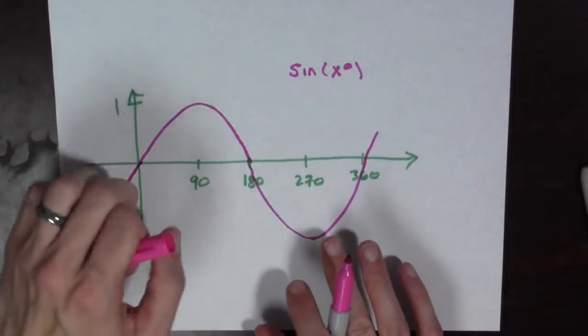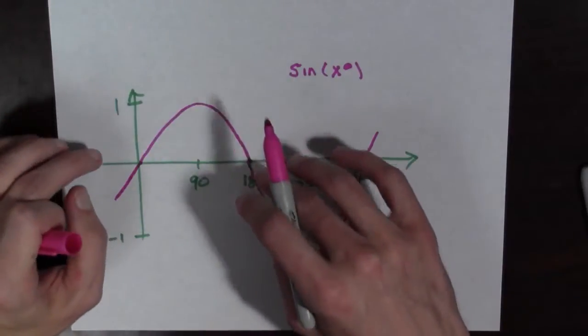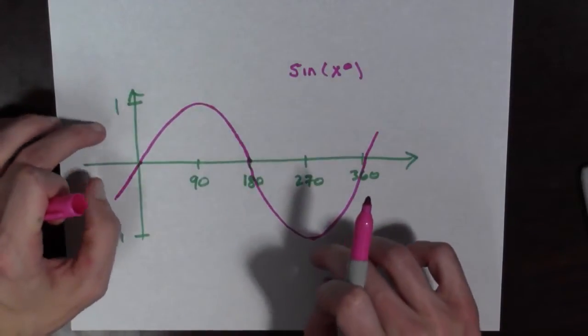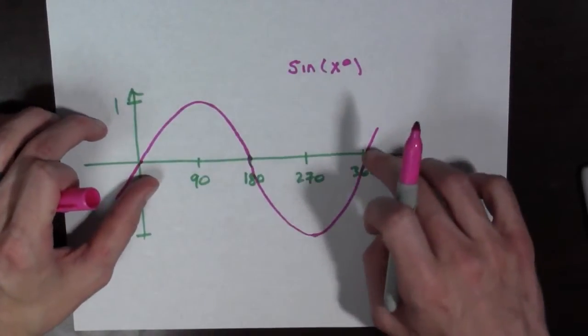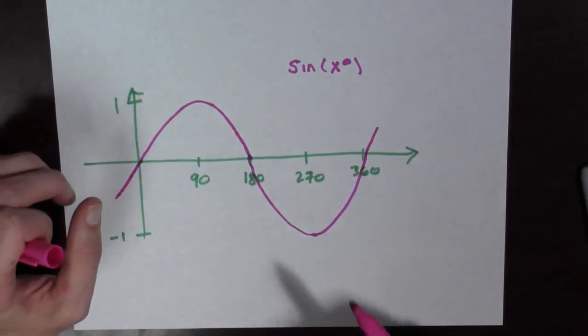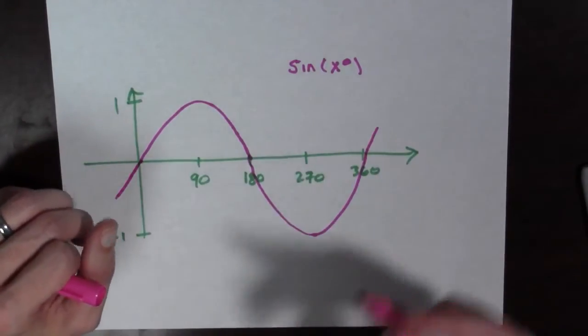It's going to have a local max at 90 degrees. It's going to come back down at 180 degrees, come back down and have a local min at 270 degrees and then be zero at 360 degrees. This is what sine of x degrees looks like.